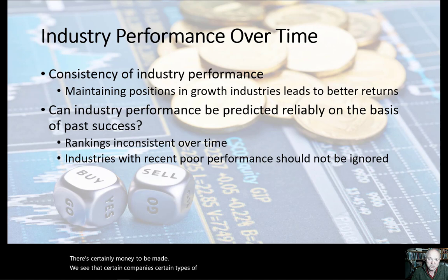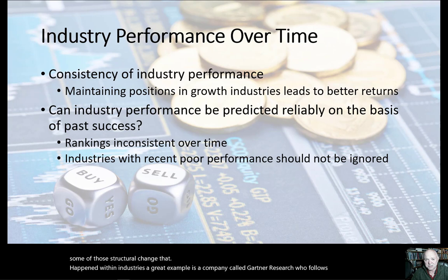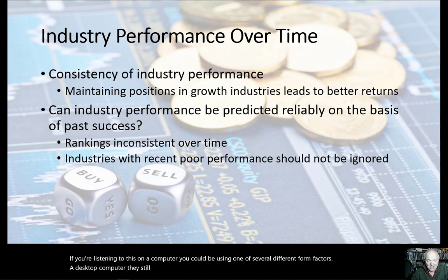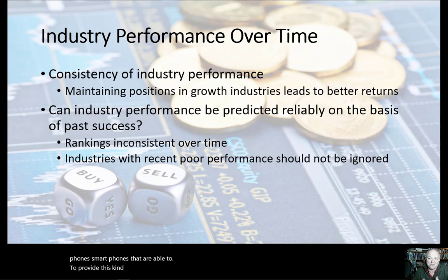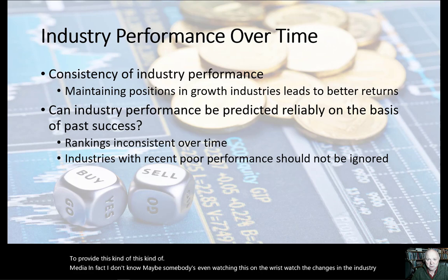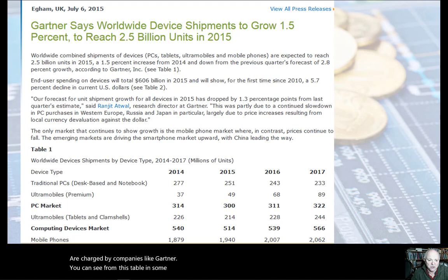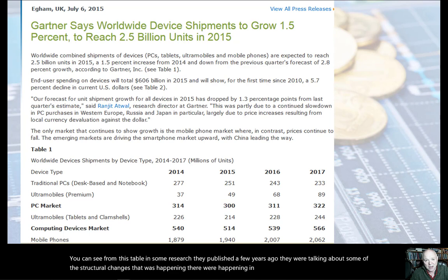Certain specialists follow industries and help us understand structural changes happening within them. A great example is Gartner Research, which follows the computer business. If you're listening on a computer, you could be using one of several form factors — a desktop, laptop, convertible laptop, ultra-mobile computing including tablets, or even smartphones. The changes in the industry are charted by companies like Gartner. From research they published a few years ago, you could see structural changes happening in the industry, and if you knew it well, you could see which players were leading the change and which ones were chasing.